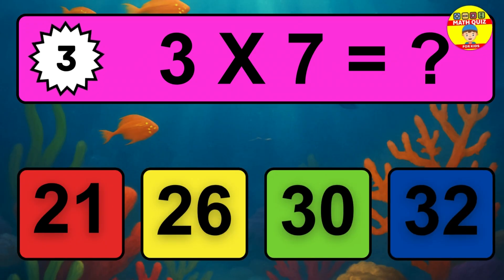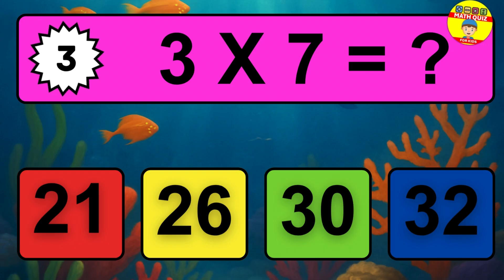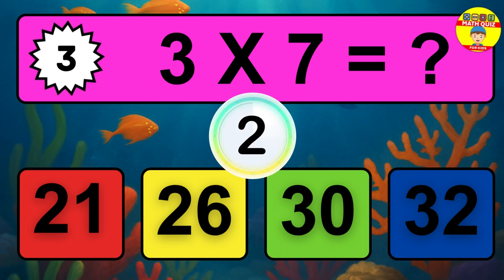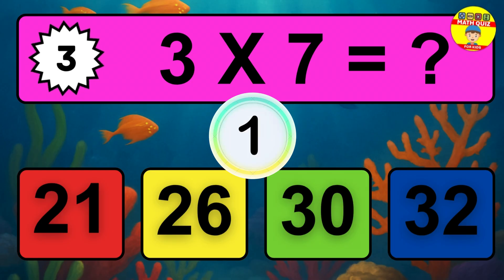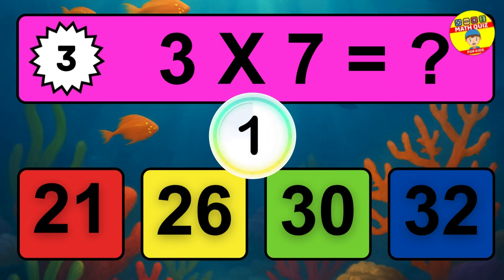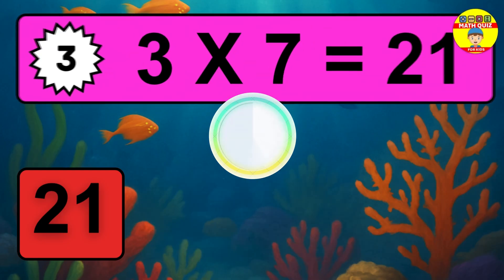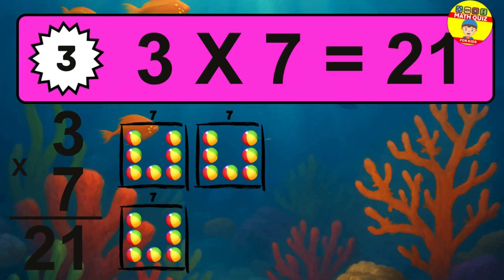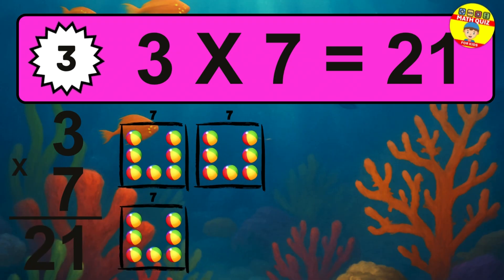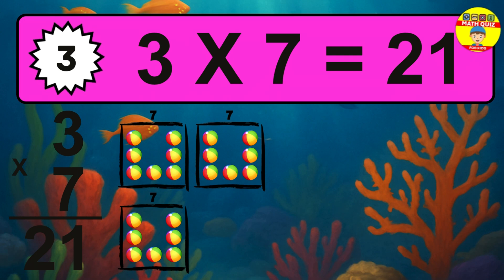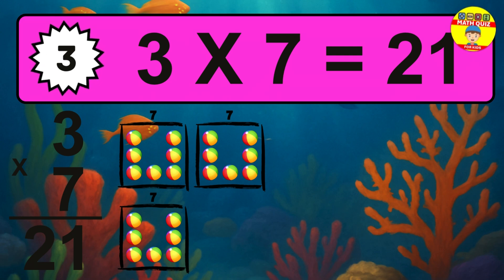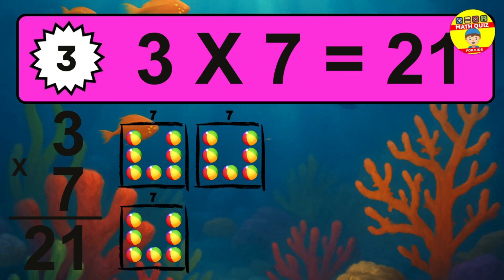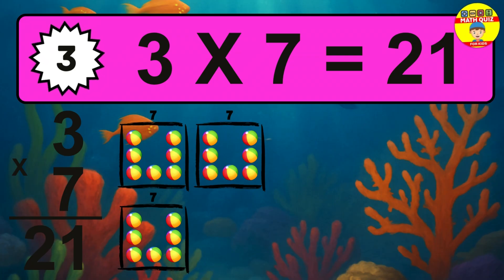Question 3. 3 times 7 equals what? The answer is 3 times 7 is 21. To calculate, we have 3 groups with 7 balls each one. So, how many balls do we have? 21 balls.